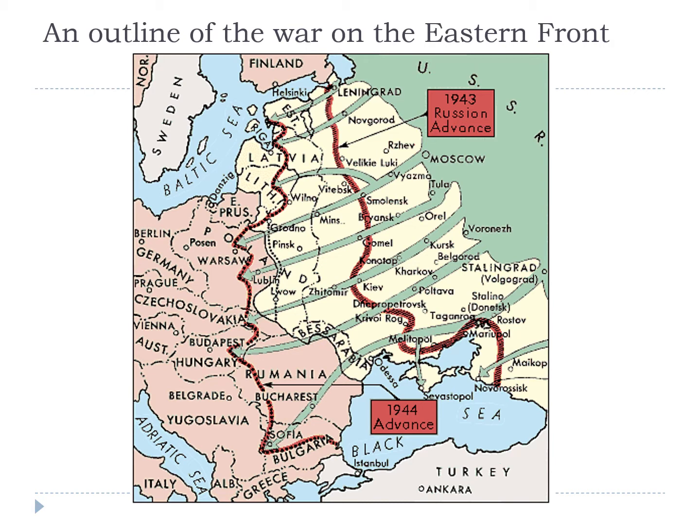This map gives a really nice outline of the Eastern Front and where things took place. You can see the Russian advance lines showing them being pushed back into the green region of the USSR, then pushing back to the first red line by 1943, and then by 1944 all the way back into Germany itself, forcing the advance backwards.